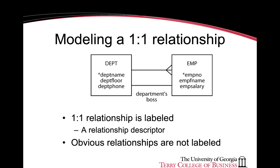A one-to-one relationship can exist between two entities, but modeling such a relationship requires a label on it. The reason we need a label is because the substance or meaning behind many-to-many and one-to-many relationships can be inferred from the type of relationship between the entities. However, a one-to-one relationship has no distinguishing characteristic and as such needs to be labeled. In this example, we have department and employee entities, and the one-to-one relationship between them — the department's boss — subsequently needs to be labeled.